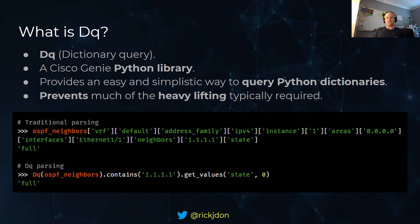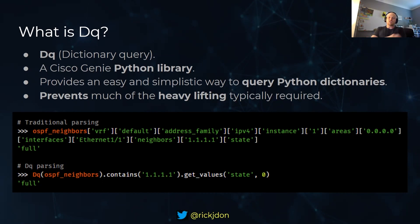DQ is a Python library, and it's part of the Cisco PyATS/Genie framework - it's a Genie Python library. You can see here the top example is the traditional way, where you step through every single key to navigate down the structure. With DQ parsing, you do it in reverse - you literally tell it what value you want to take from that structure.